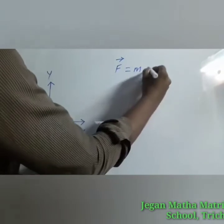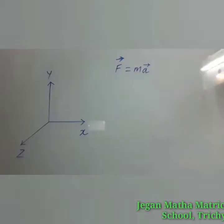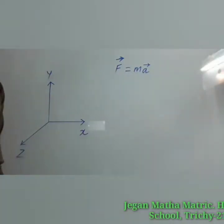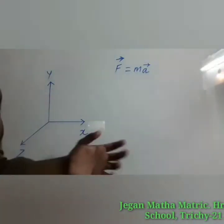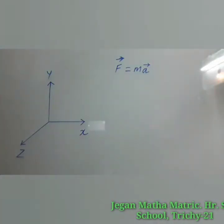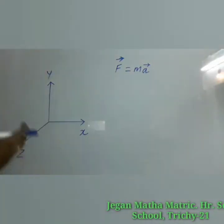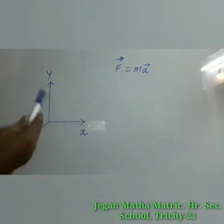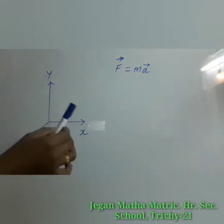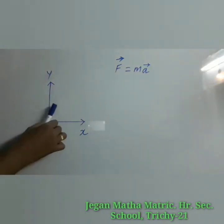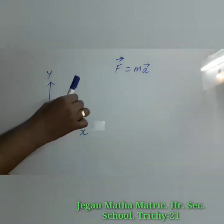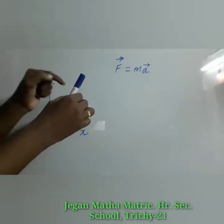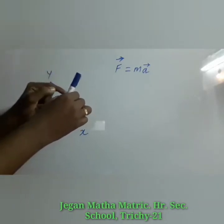This vector equation is essentially equivalent to three scalar equations. Here I have taken the Cartesian coordinate system. Imagine an object is accelerating three-dimensionally — then you can understand some external force is acting on the object, that's why it is accelerating.